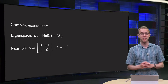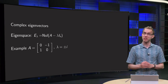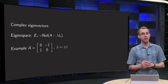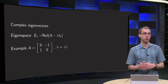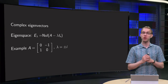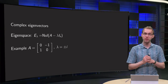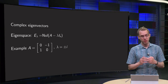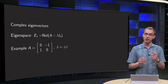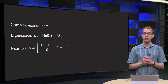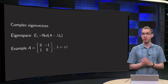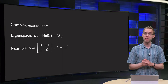We have seen that some matrices have complex eigenvalues, but how can we find the corresponding eigenvectors or the corresponding eigenspace? That's what you will learn in this video. We will start out again with our matrix [0, 1, -1, 0], because we knew the eigenvalues were plus or minus i.